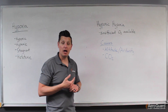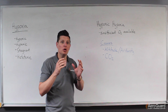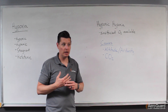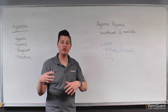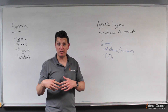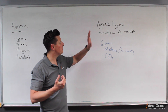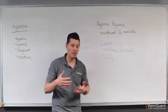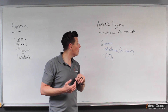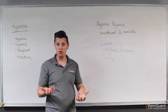With hypoxic hypoxia, hypoxia implies our body is unable in some way to get the oxygen it needs — our cells can't get the oxygen they need to continue to function normally. In the case of hypoxic hypoxia, this means there is an insufficient amount of oxygen available for us to breathe.